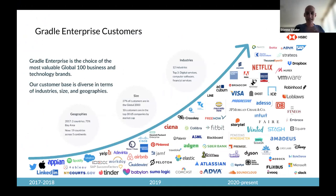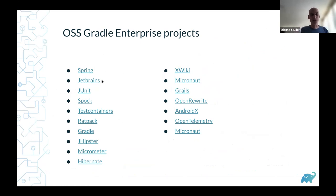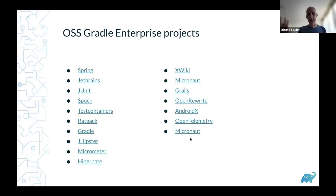We also have other open source Gradle Enterprise instances running. Spring was one of the first; others include Kotlin compiler, JUnit, Spock, Testcontainers, Micronaut foundation across their 80 projects, Micrometer, and Hibernate. Some use it with Gradle, some with Maven — it works exactly the same way either direction.